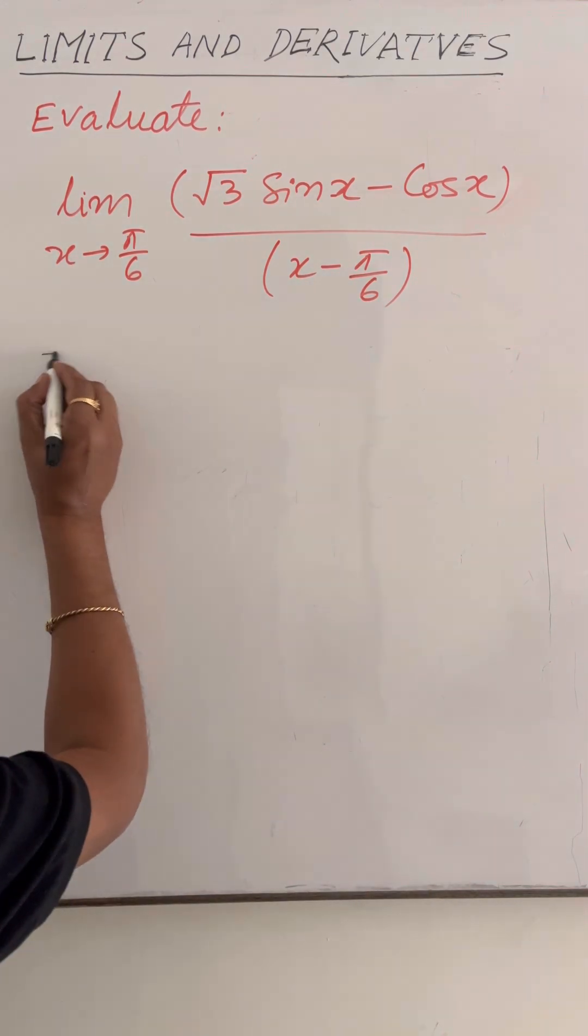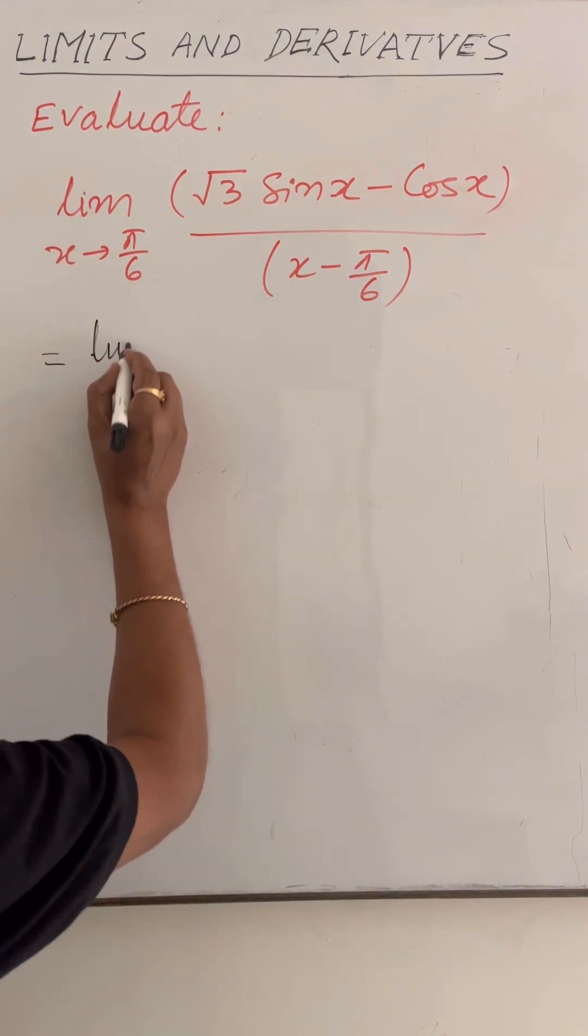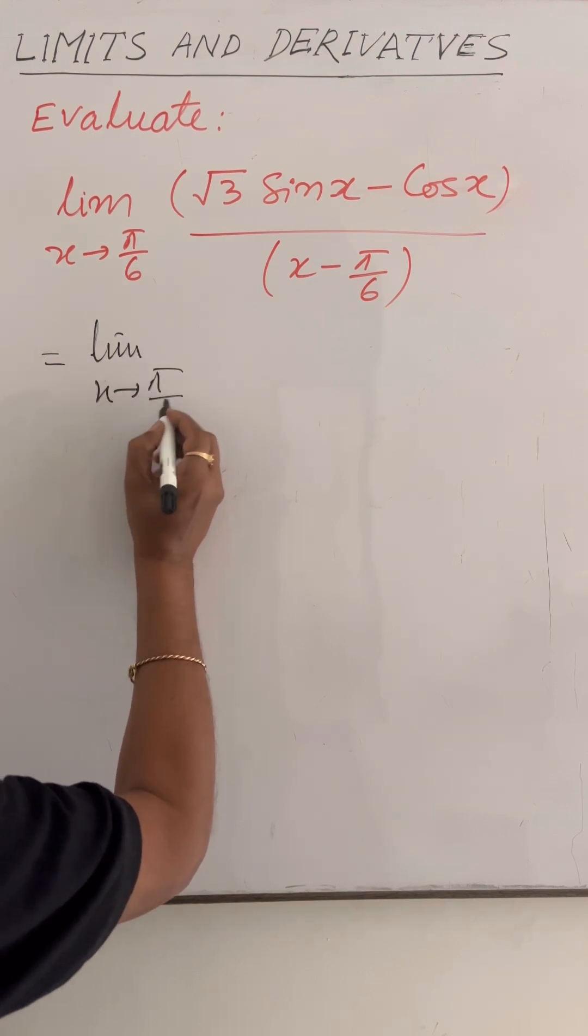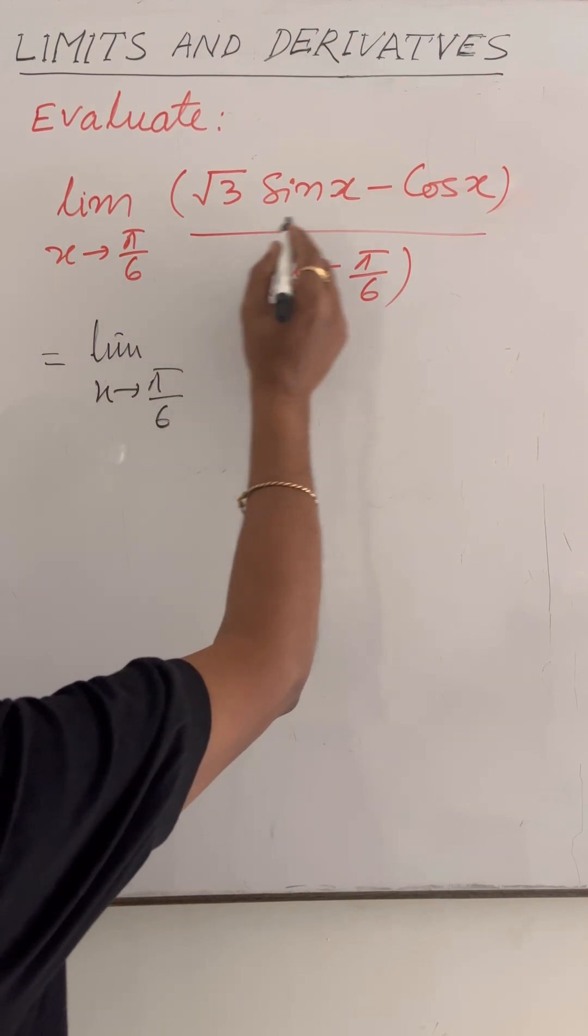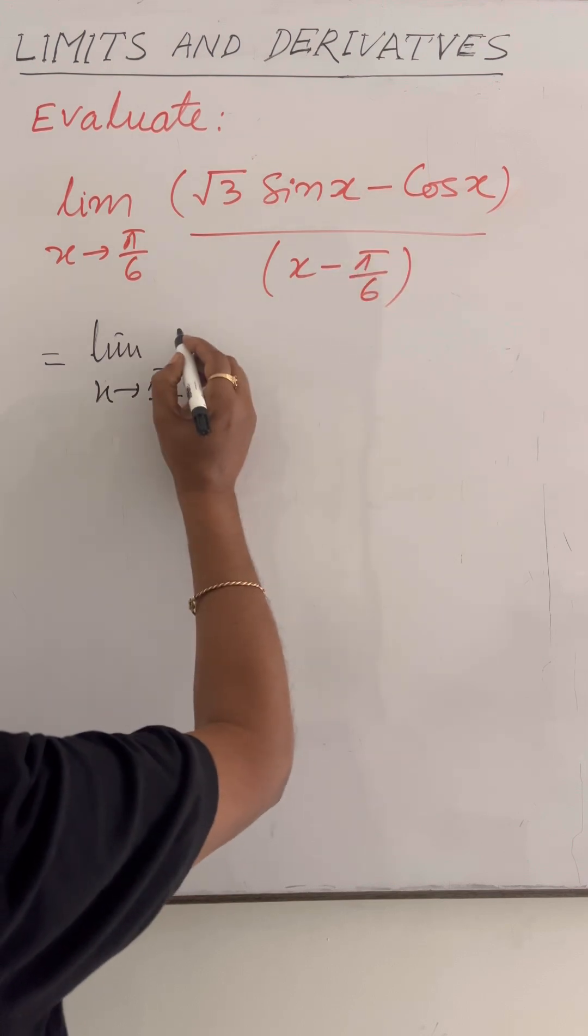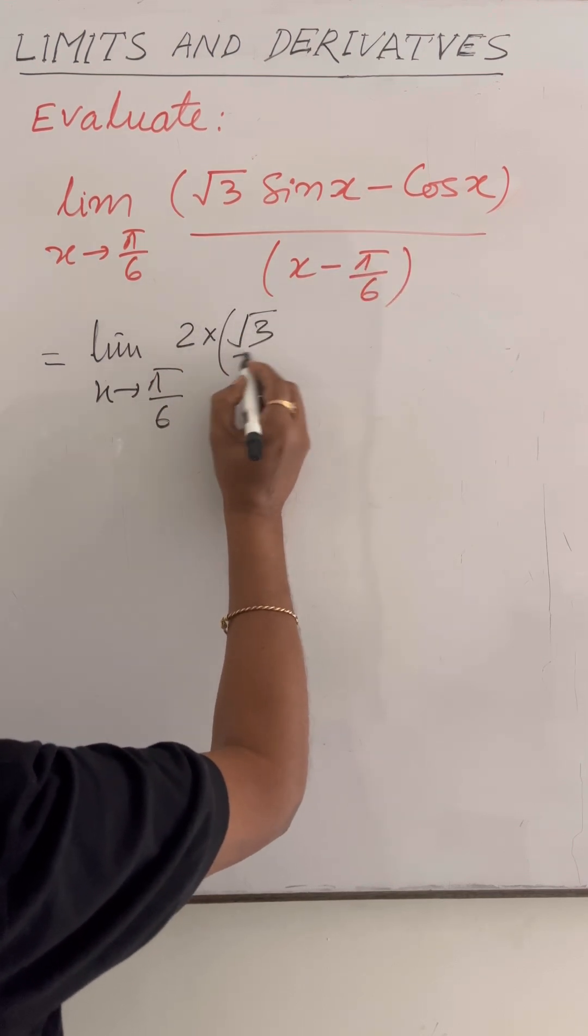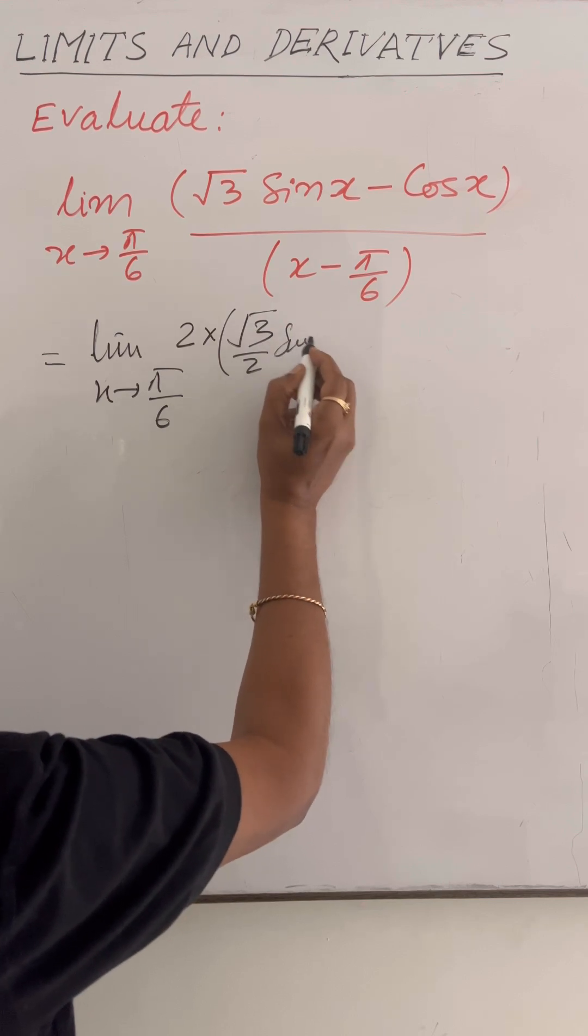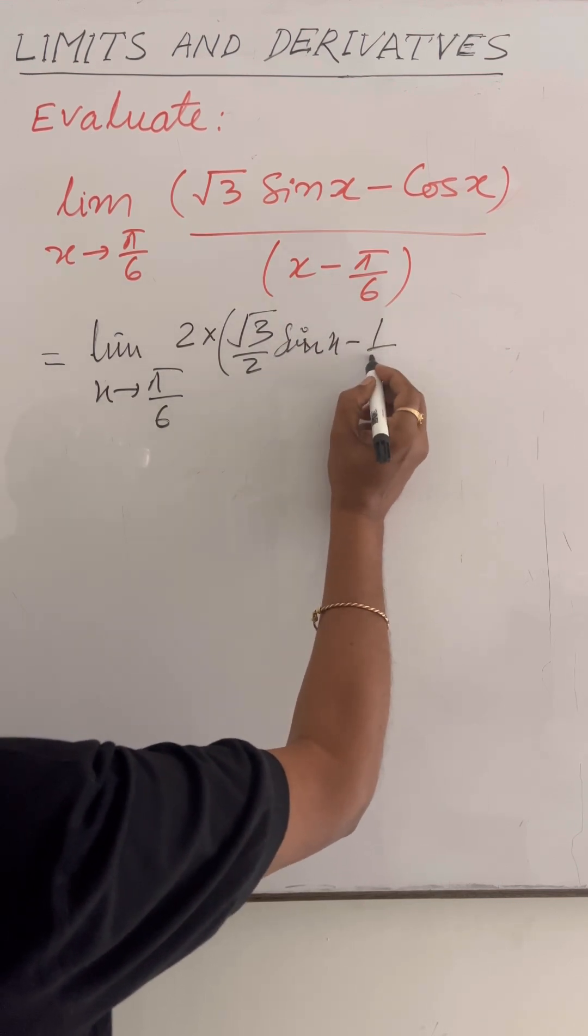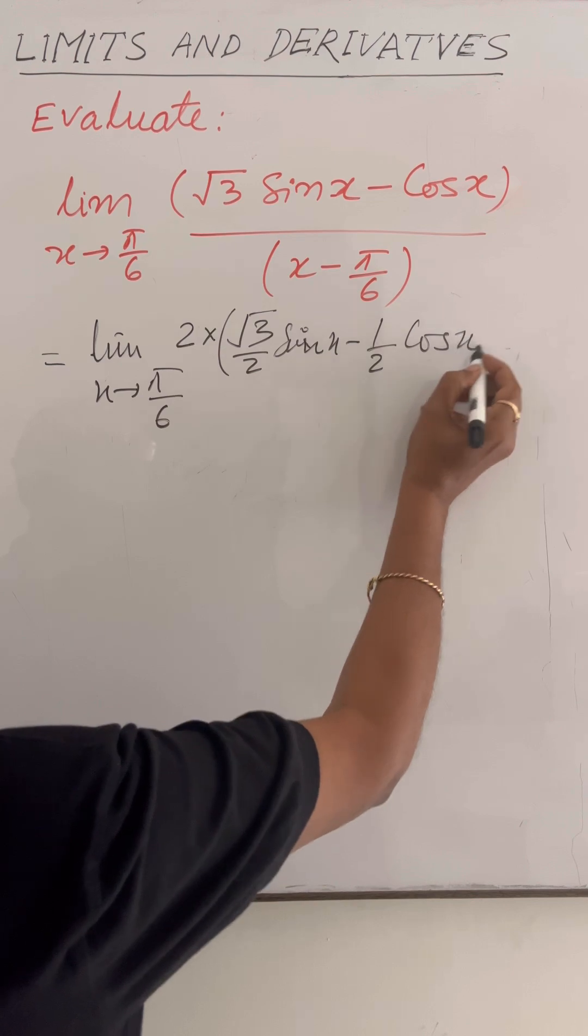This can be written as limit x tends to π by 6, multiplying numerator and denominator by 2. So this is 2 into √3 by 2 into sin x minus 1 by 2 into cos x upon x minus π by 6.